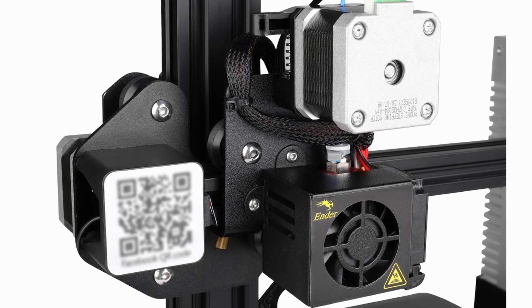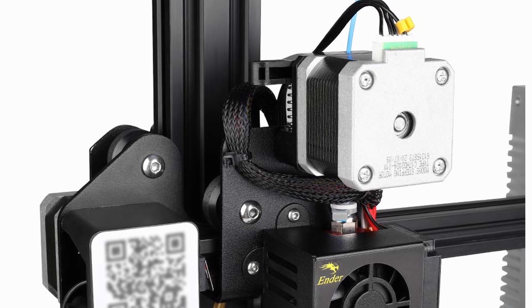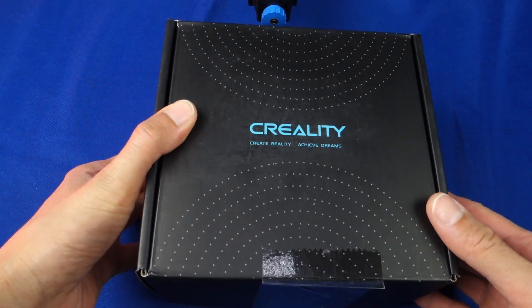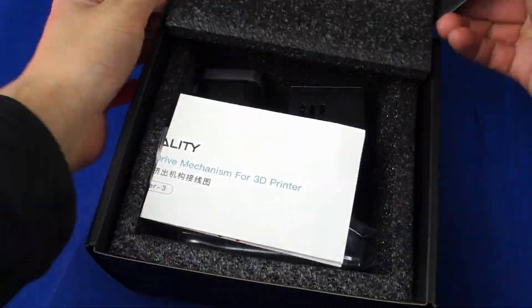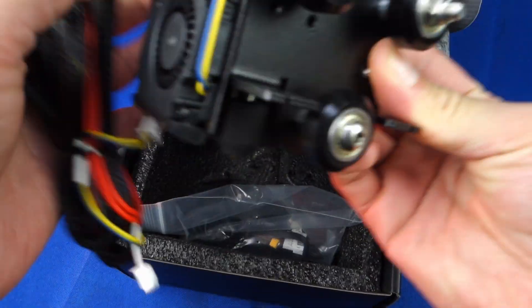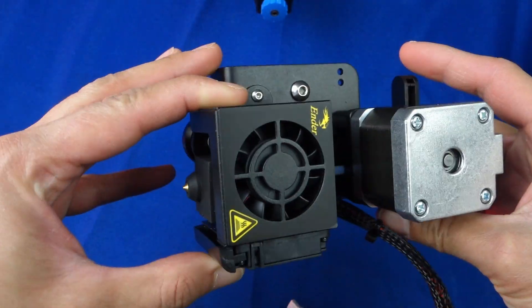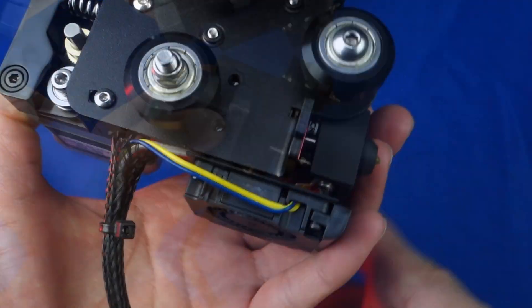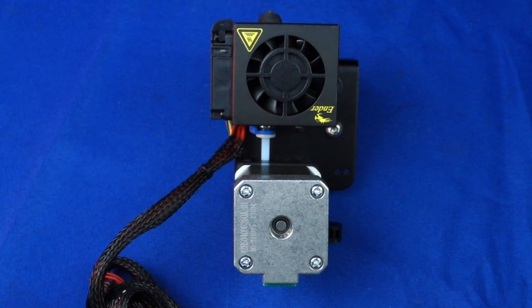Before installing anything we will first want to upgrade the direct extruder hot end assembly that we have ordered. In this case I am using a version that is sold by Creality themselves, but we will be upgrading both the extruder feeder along with the hot end. If you are doing this yourself you will want to upgrade the extruder feeder first because it will be easier to reassemble afterwards.